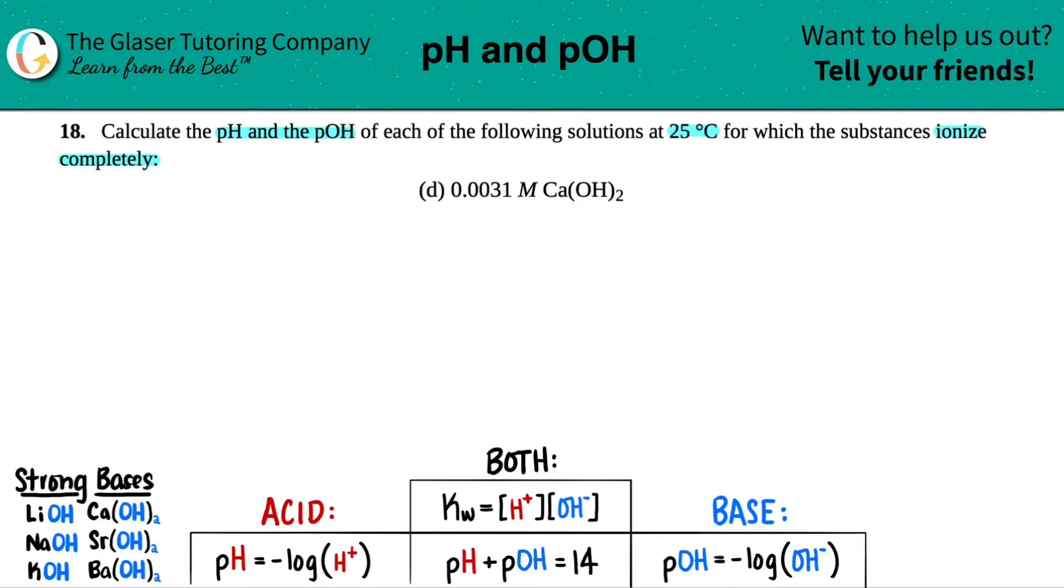Now, they did give us a little hint here. They said that the substance will ionize completely. Ionize completely just means that this compound, Ca(OH)2, when placed in water, an aqueous solution, it will break down 100% into its ions.